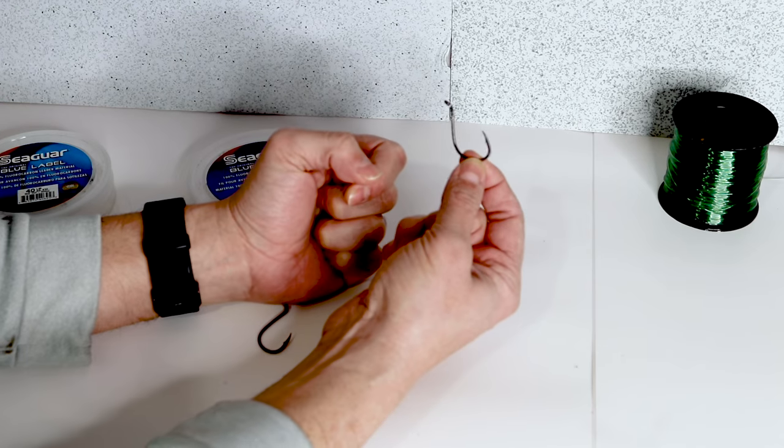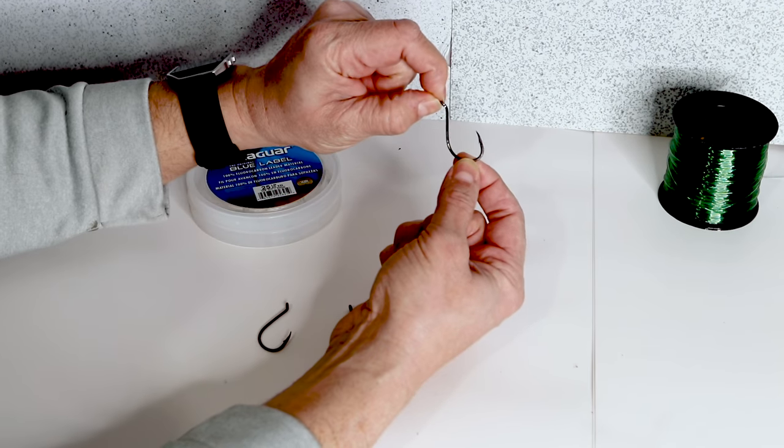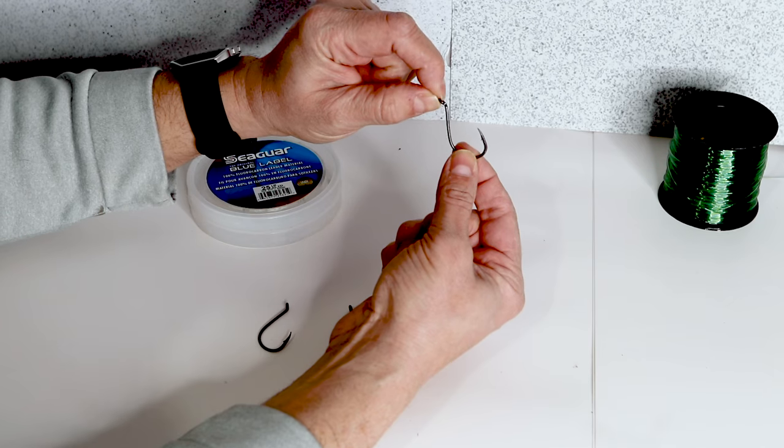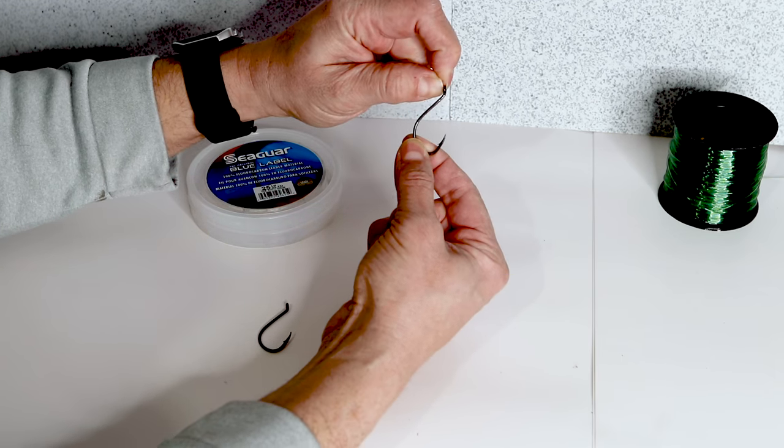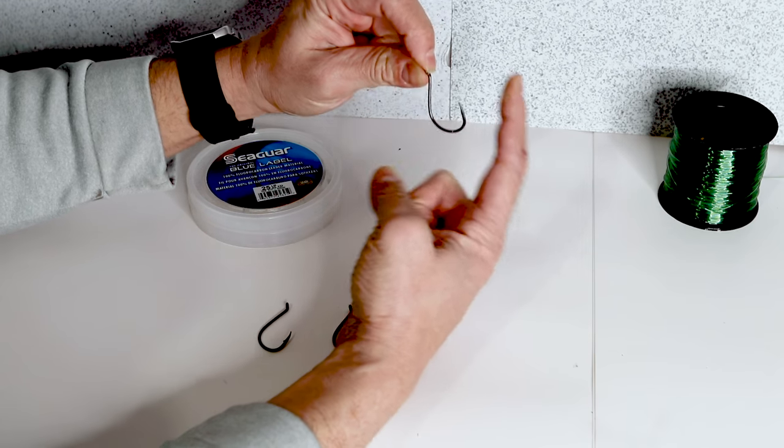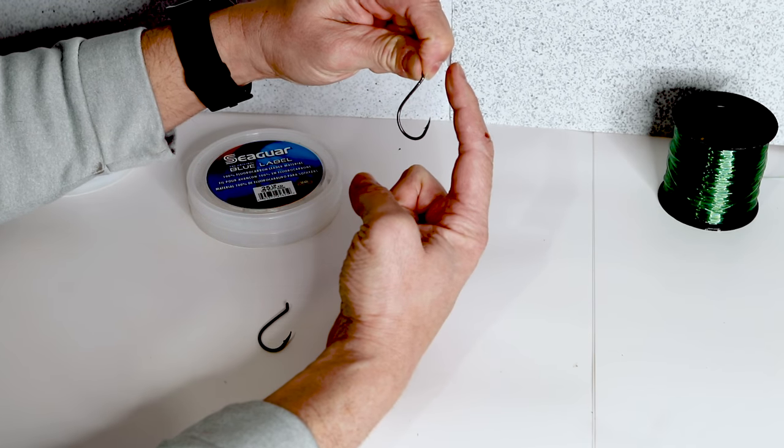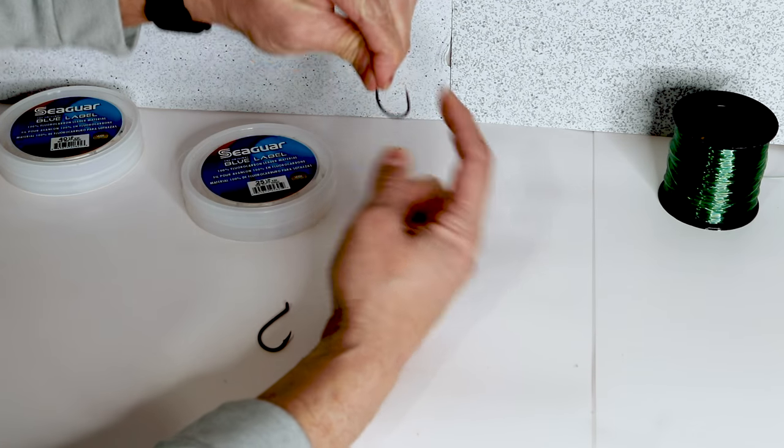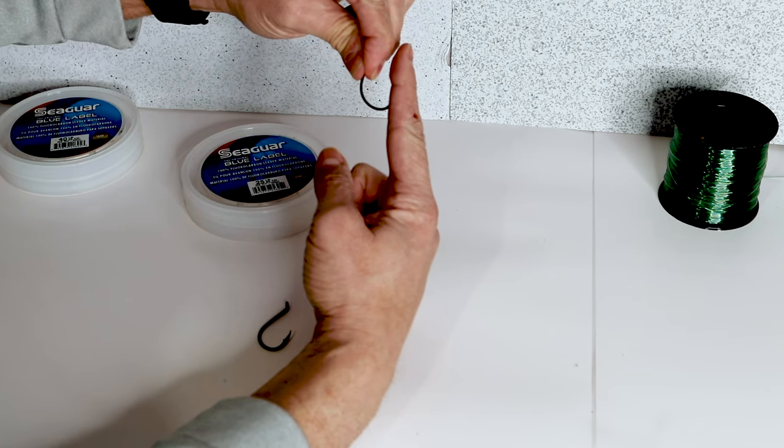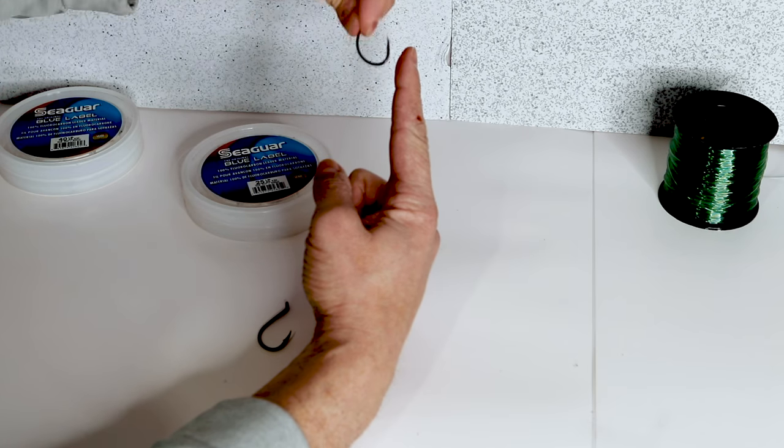And we'll demonstrate this in a little bit, but if you tie only on the end, your pull point is actually going to pull the hook like this, and you're actually pulling the hook away from the fish. If you're going directly to the shaft, it's a straight pull point.